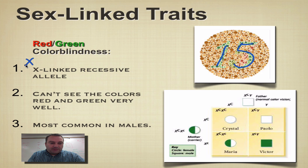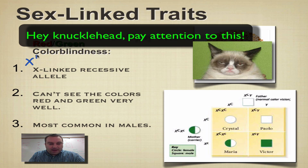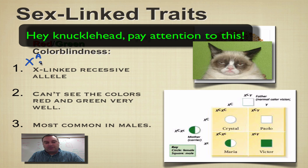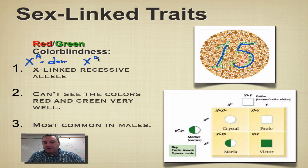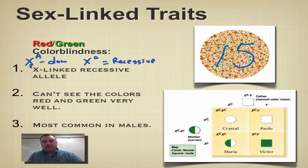When doing X-linked traits, we list them like this: the dominant allele gets a superscript by the X — that would be the dominant allele — and the recessive allele gets a lowercase letter. We use superscripts because we have to indicate which sex chromosome the trait is found on, which is why we put the X there.